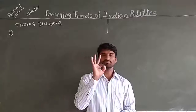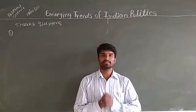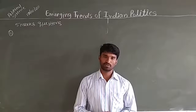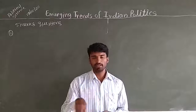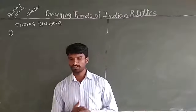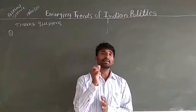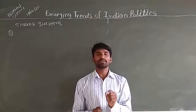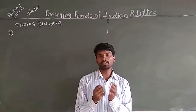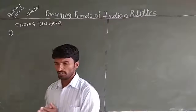National emergency has been declared three times. Second, State Emergency — under Article 356, when there is a breakdown of governmental machinery in a state, President's Rule can be introduced and the whole administration is managed by the central government. State emergency has been declared about 100 times. Third, Financial Emergency — under Article 360, when the financial condition is too poor, that emergency can be declared.